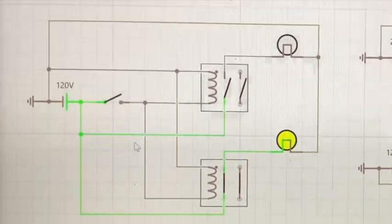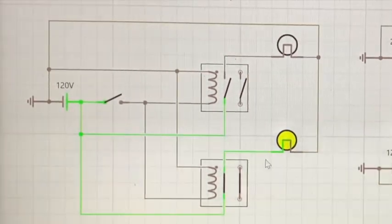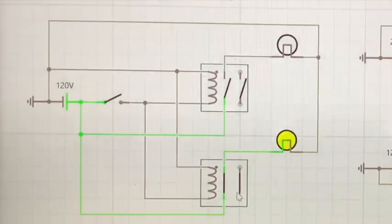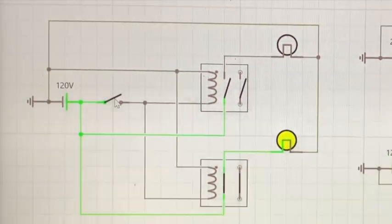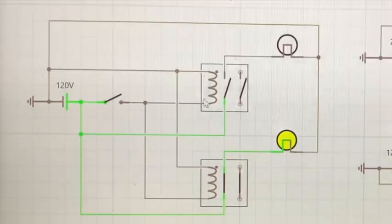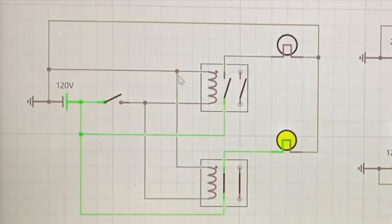At the same time, because remember the relay we saw had two, had a normally open and normally closed function. This one is normally closed, this one's normally open. When I add power, the voltage is going to go to the coil. As long as our neutral is hooked up, this is actually going to magnetize and close this circuit.